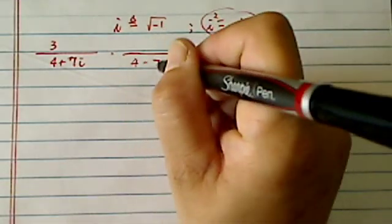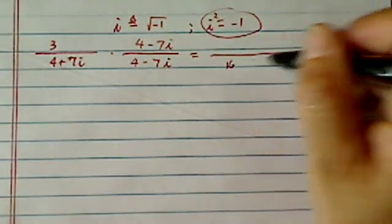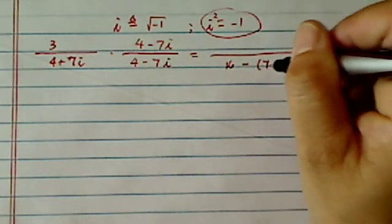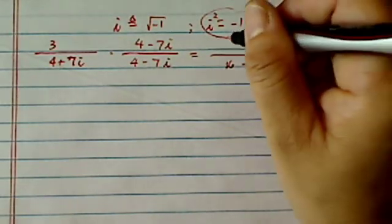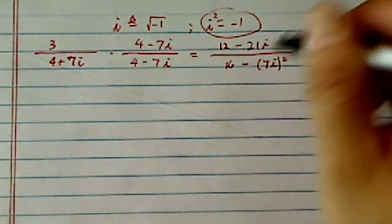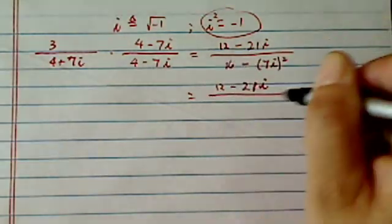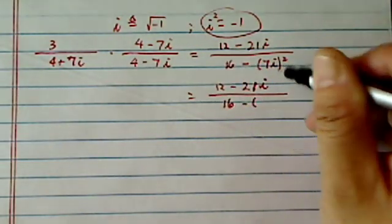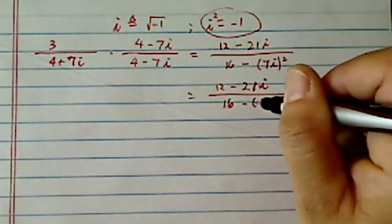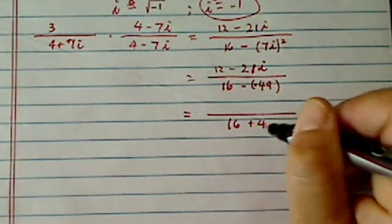We're going to do exactly the same thing, multiply by its conjugate. So I have 16, which is 4 squared, minus 7i squared. On top, I'm going to FOIL, which is minus 12, 12 minus 21i. 12 minus 21i, 16 minus, this is 49, but with a minus sign. So on the bottom line, I would have 16 plus 49.